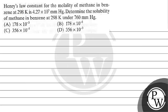Let's read this question. Henry's law constant for the molality of methane in benzene at 298 Kelvin is 4.27 × 10⁵ mmHg. Determine the solubility of methane in benzene at 298 Kelvin under 760 mmHg. Option A: 1.78 × 10⁻³, option B: 1.78 × 10⁻⁵, option C: 3.56 × 10⁻⁵.